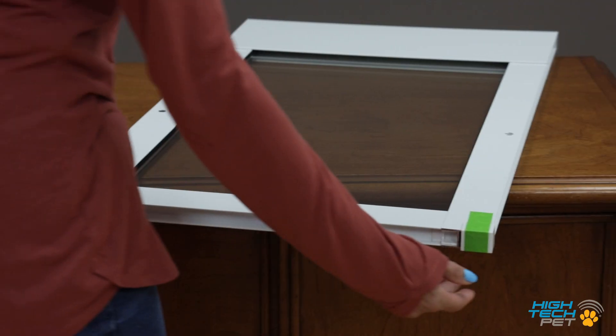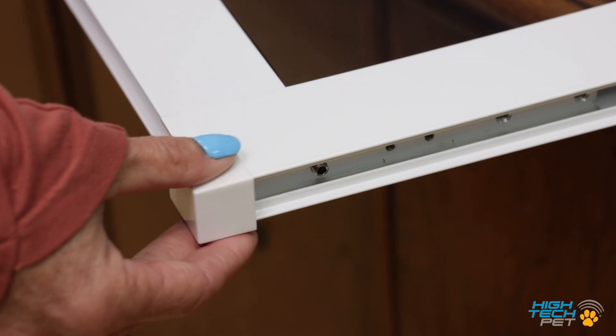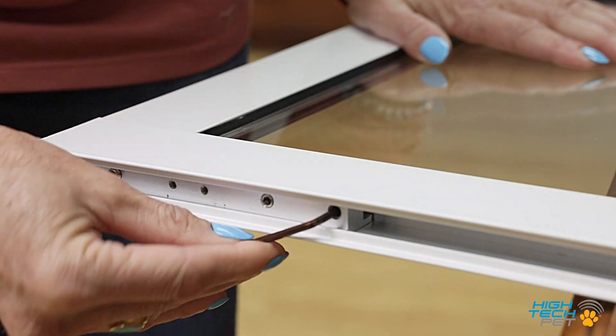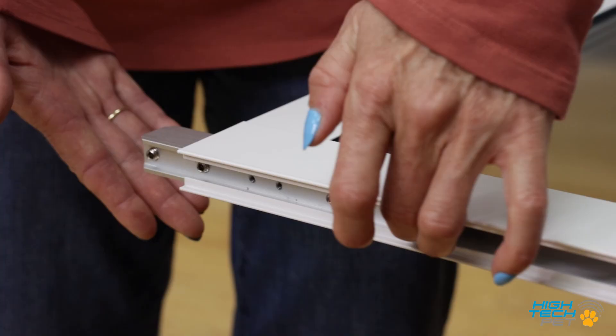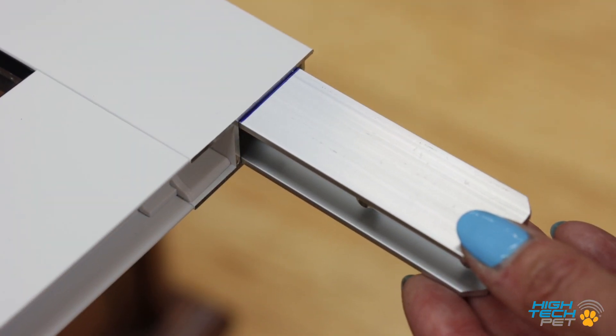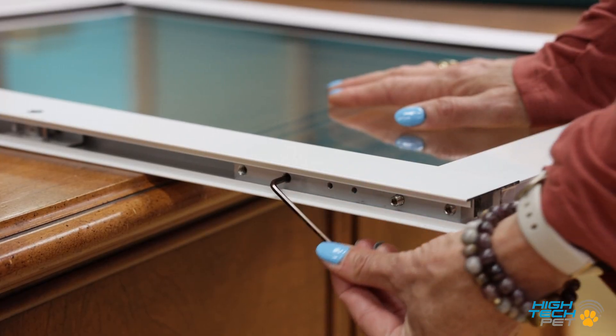Start by removing the recyclable plastic shipping protectors from the corners of your door panel. Now loosen the section connectors located on the top panel and raise to the halfway mark. Retighten the section connectors top set screw.